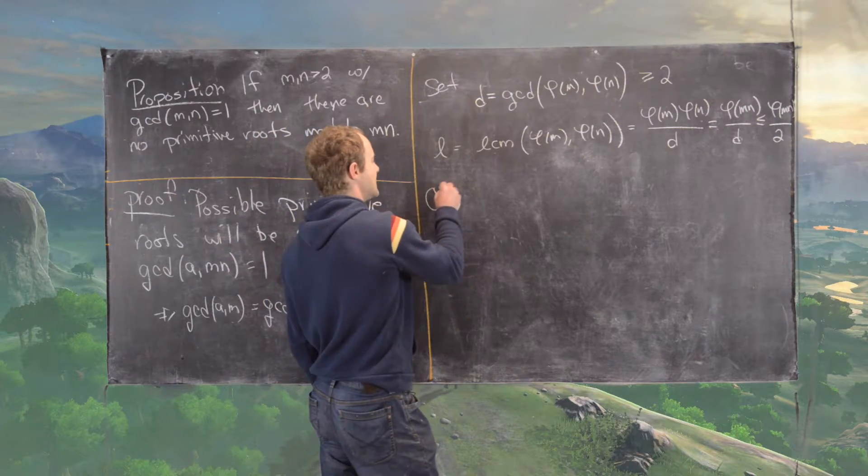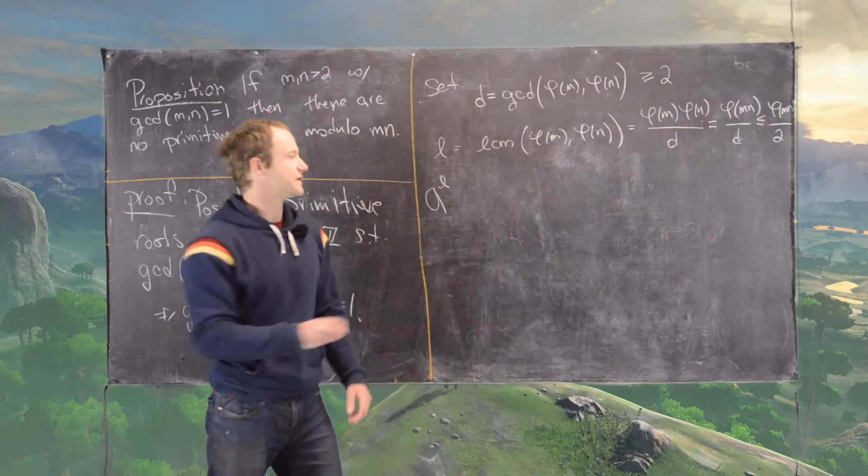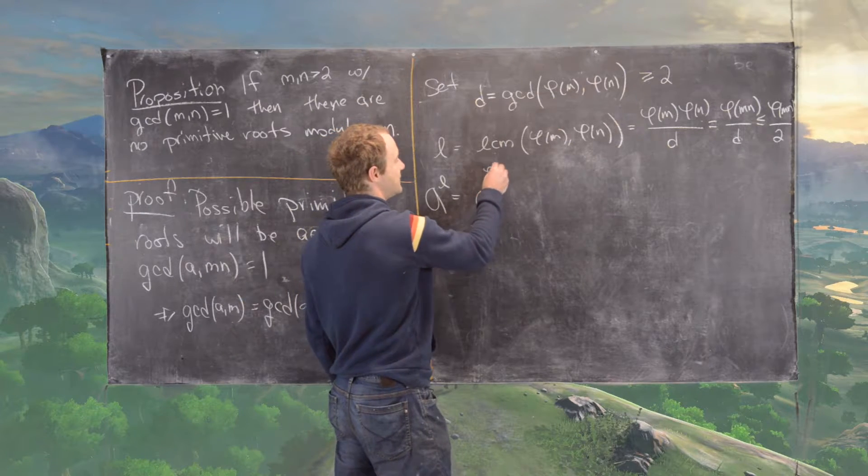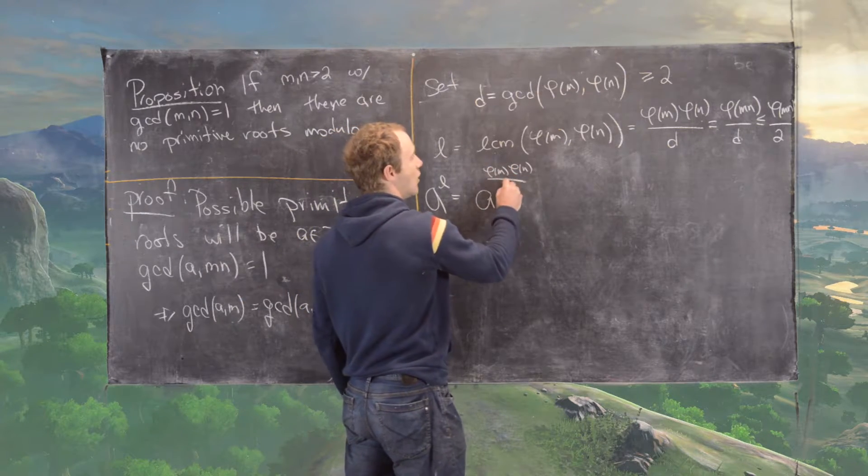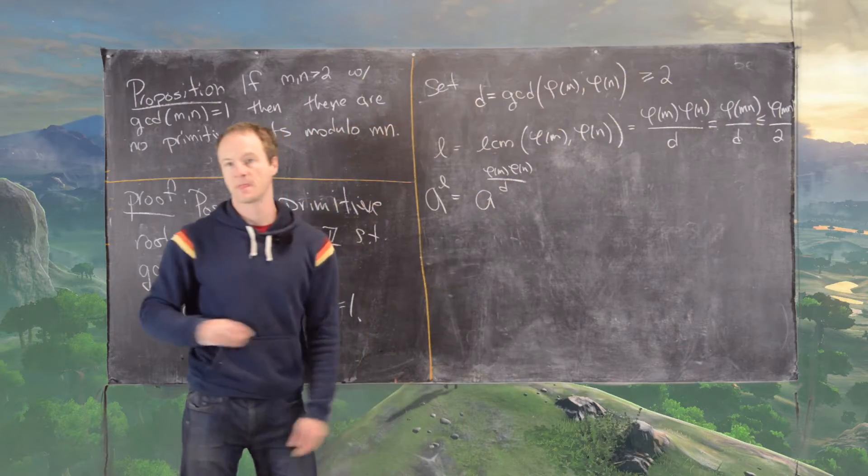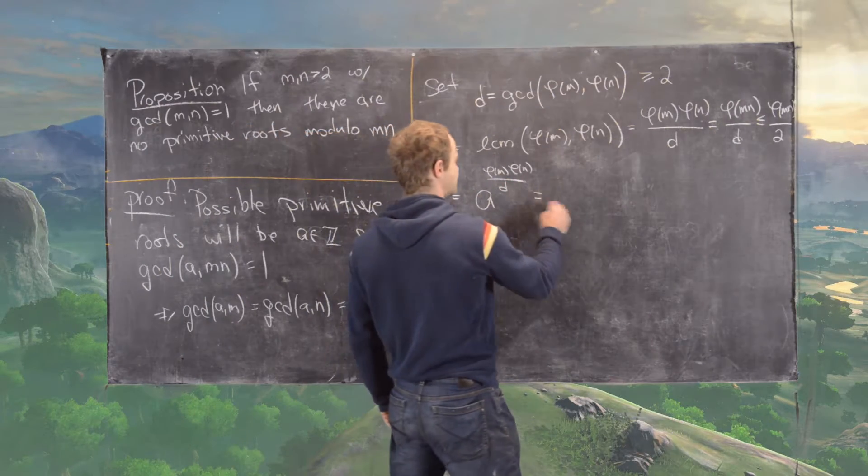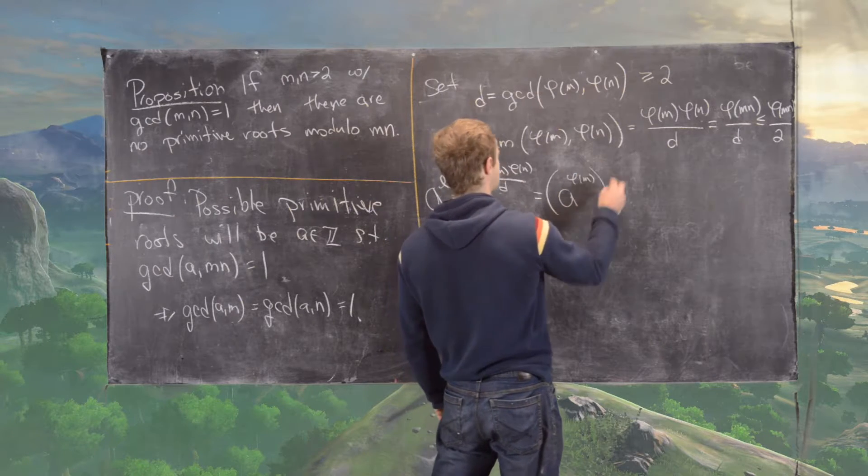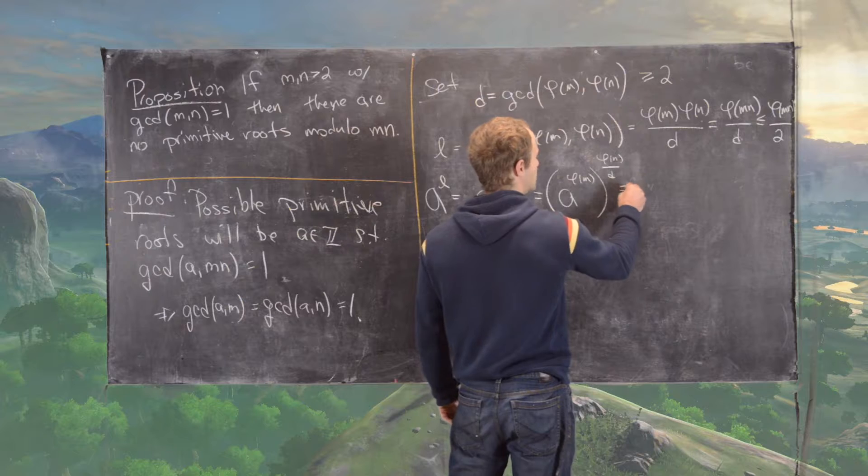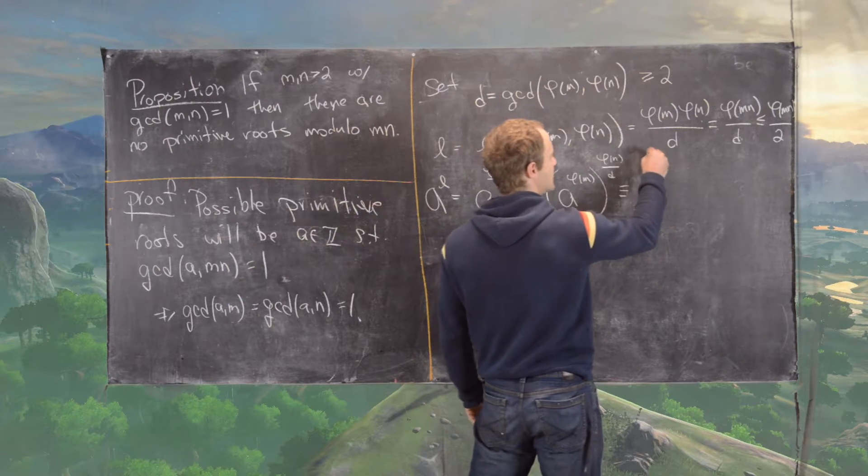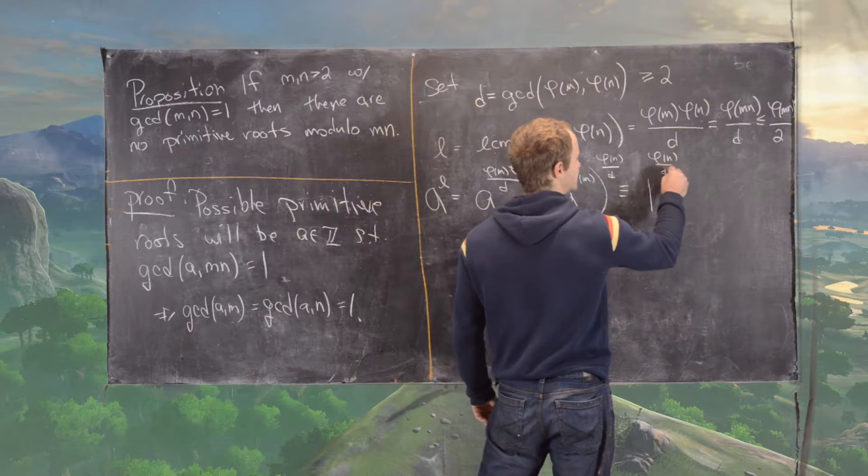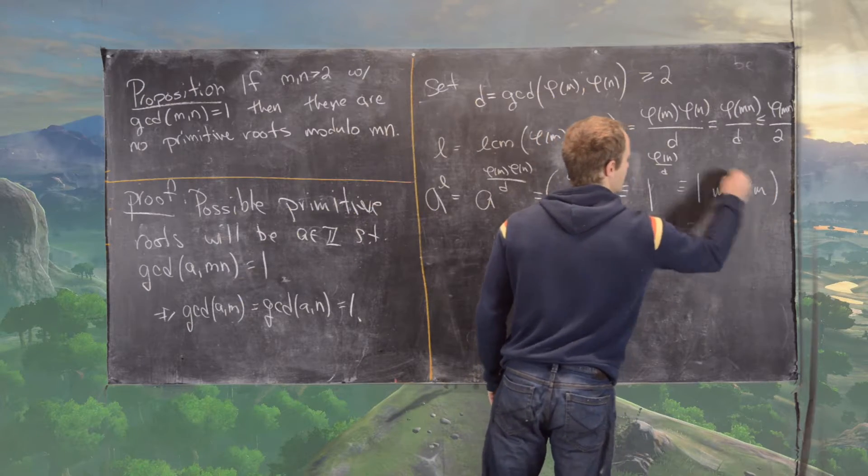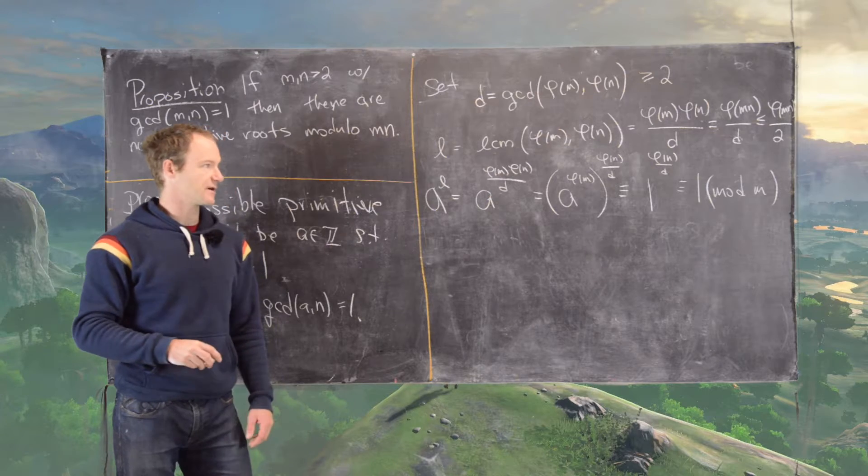So now let's check that A to the L—that's equal to A to the phi of M times phi of N over D. But now we can write that as follows: that's A to the phi of M, all of that to the power phi of N over D, which is congruent to 1 to the phi of N over D, which is congruent to 1 modulo M. And that's by Euler's generalization of Fermat's little theorem.